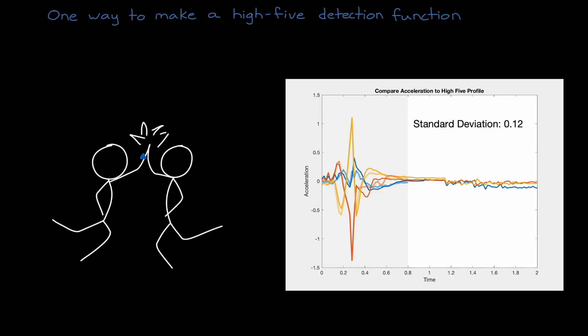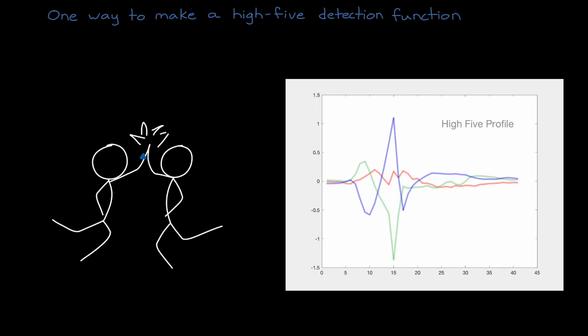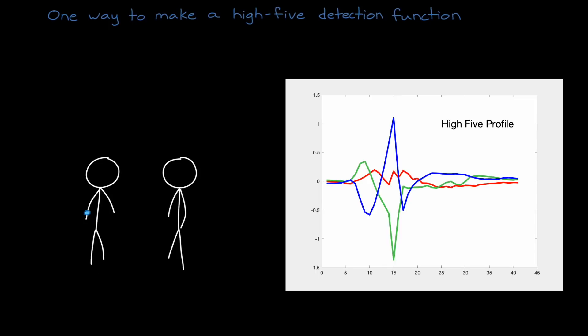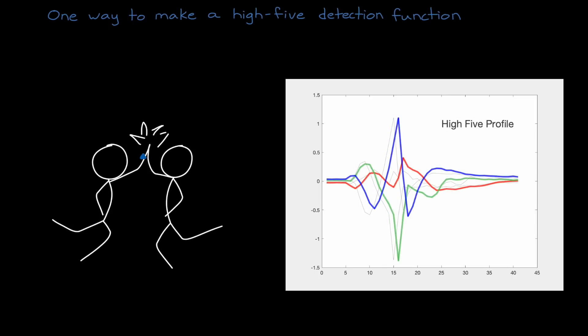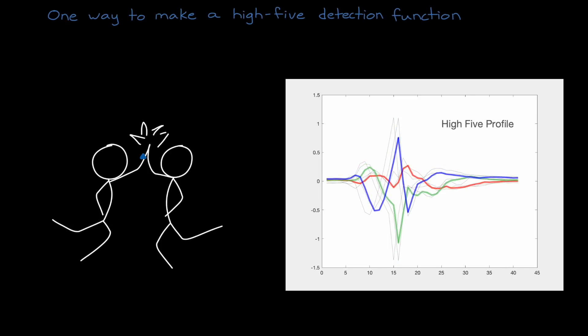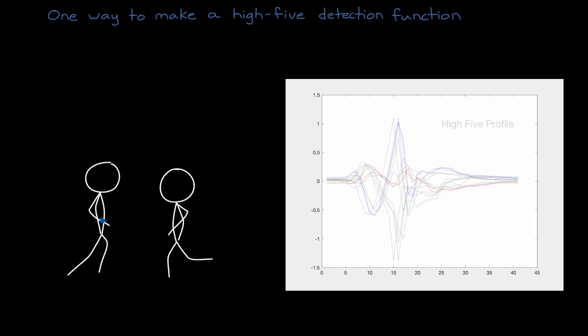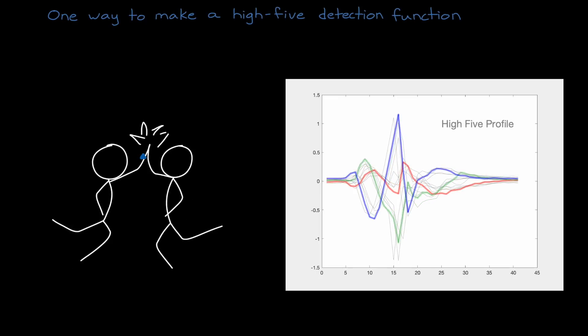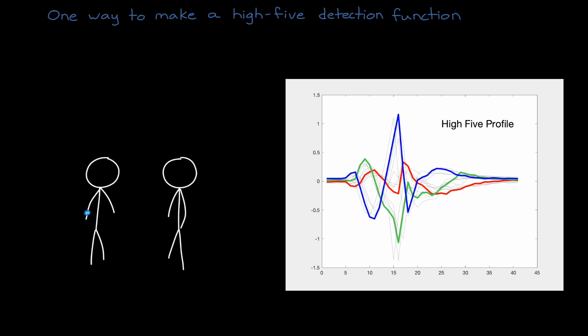However, we can make this problem more difficult by realizing that every high-five is not the same, but that the acceleration pattern varies from instance to instance. Some people might move their hand faster, or slower, or pause right before the big slap, or just high-five in a strange way. Now, if we want to use our standard deviation approach, we have to do that for each profile in the set. And if the deviation between any of these profiles and the sensed acceleration drops below some threshold, we claim a high-five took place.